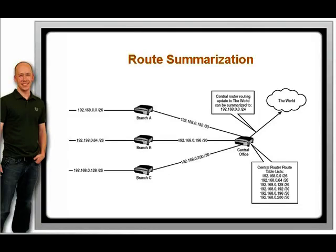With more than 160,000 routes known to major internet routers at the time of this writing, some way to reduce the number of entries is not only desirable but also critical. In the previous VLSM example, all the subnets for the branches and the WAN links were created from the 192.168.0.0/24 class C network. If we take that diagram and put it into context, we can see how route summarization can reduce the number of entries in the route table.